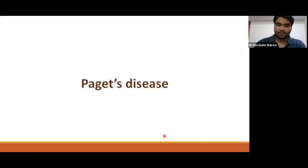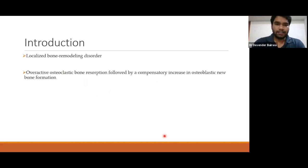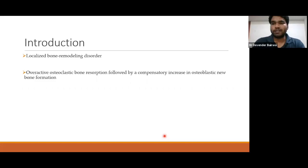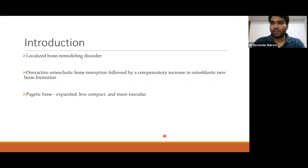We will now go to Paget's Disease. Remember these case scenarios — you might find one or more of them in this disease. Paget's Disease is a localized bone remodeling disorder associated with overactive osteoclastic bone resorption followed by a compensatory increase in osteoblastic new bone formation. There is increased bone resorption followed by increased bone formation. Pagetic bone is expanded, less compact, and more vascular. Although the mass of bone increases, the volume also increases and the quality is poor, making it more prone to deformities and fractures.